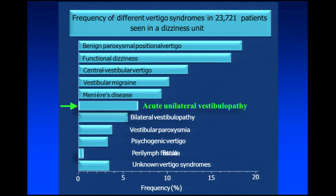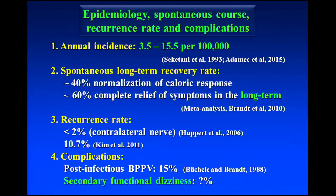Here you see the data from our German Dizziness Center in Munich on more than 23,000 patients. You can easily see that acute unilateral vestibulopathy is the third most frequent type of vertigo, after benign paroxysmal positioning vertigo and Menière's disease. The annual incidence ranges around 10 per 100,000, and in our center we see about 100 to 200 patients per year who require treatment.